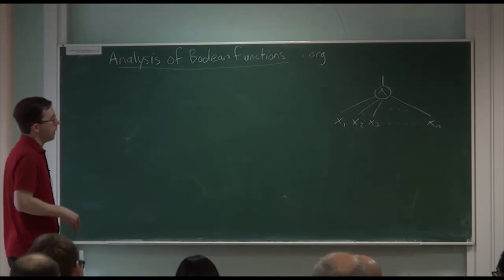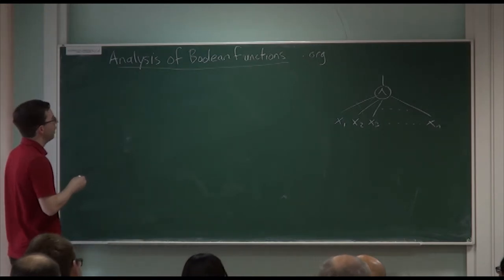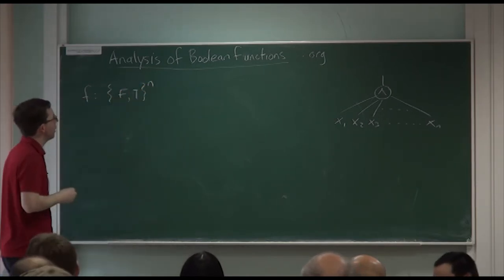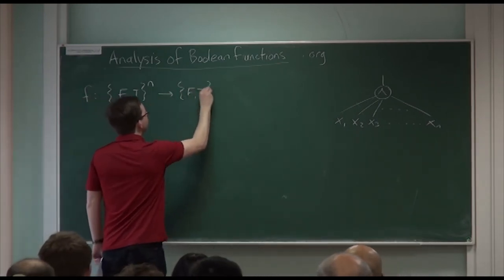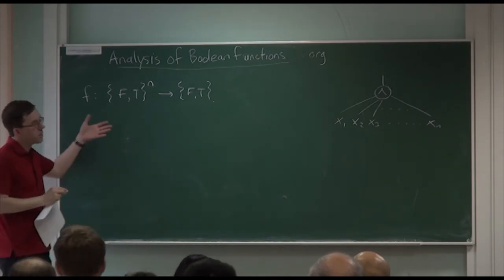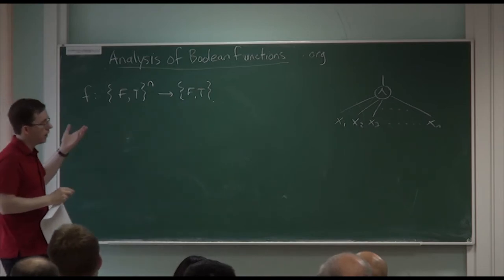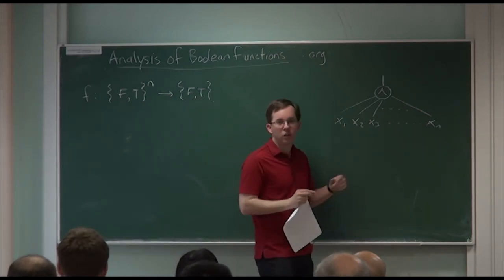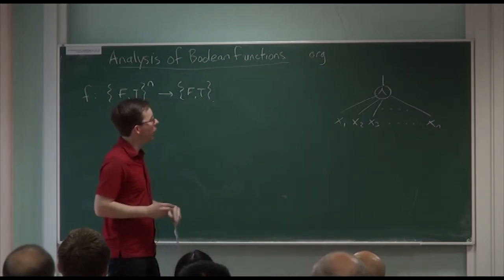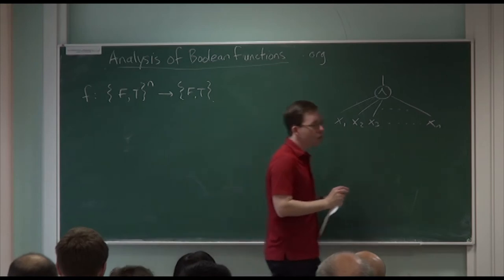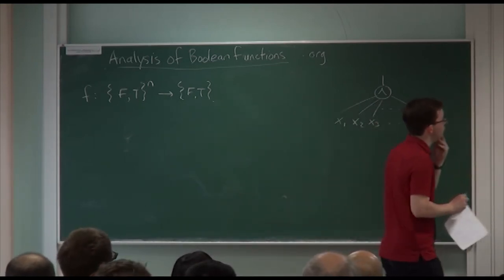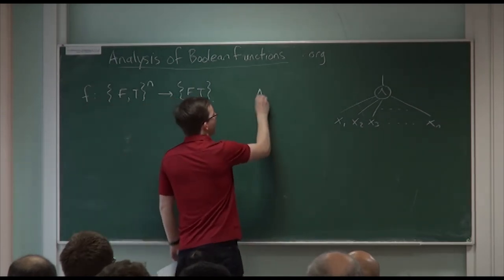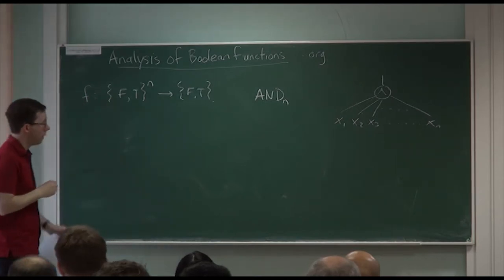We're going to be talking about Boolean functions, a topic that also came up in Ben's talk. A Boolean function takes n Boolean inputs that are false or true, and outputs also false or true. For a given Boolean function, there are many different ways to represent it: by its truth table of size 2 to the n, by an English language description, by a circuit or a formula — here's an example, an extremely simple circuit with just one gate — or by a decision tree, something Ben talked about. I'll call this the AND function with subscript AND to denote it has n inputs.